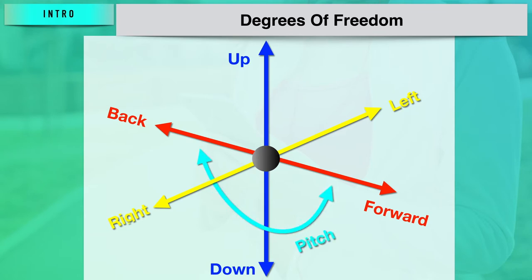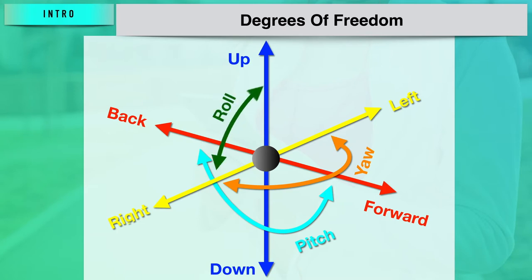Rotation is also possible, and rotation around these three perpendicular axes is often termed as pitch, yaw, and roll. When tilting forward and backward, it is normally termed as pitch. When tilting side to side, it is termed as rolling, and when turning left and right, it is termed as yaw.